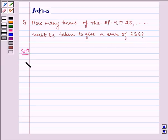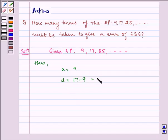Now let us write the solution. Given to us is AP as 9, 17, 25, and so on. Here A is equal to 9, d is equal to 17 minus 9 which is equal to 8, and sum of N terms is equal to 636. That is, SN is equal to 636.